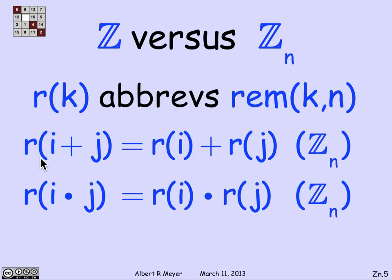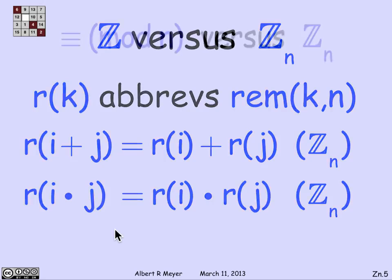This operation, this connection between mathematical structures, the structure of the integers under plus and times and Z_n under plus and times is called a homomorphism. r, in this case, is defining a homomorphism from Z to Z_n. That's a basic concept in algebra that you'll learn more about if you take some courses in algebra. But I'm just mentioning it for cultural reasons. We're not going to exploit it any further or look further into this idea.